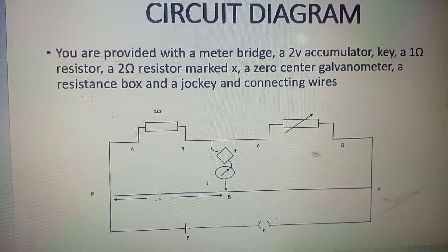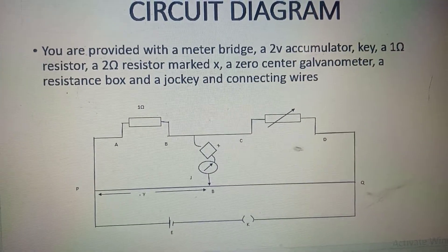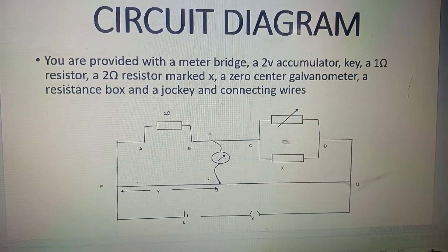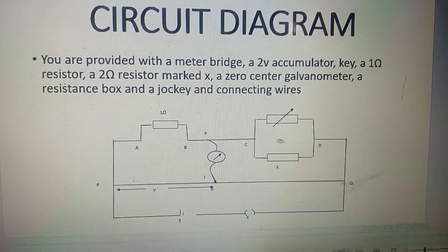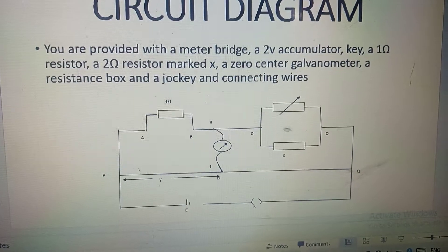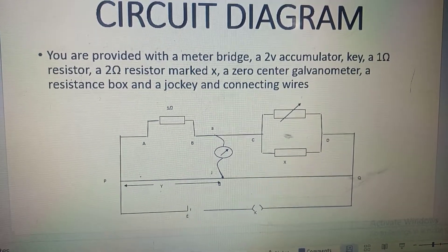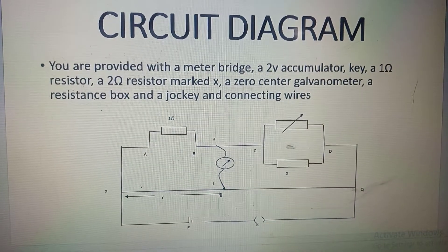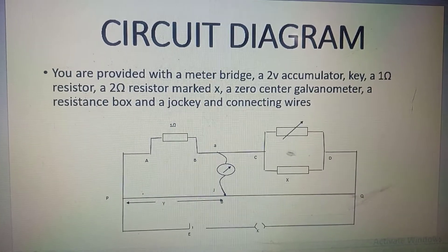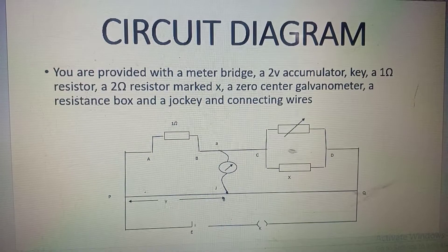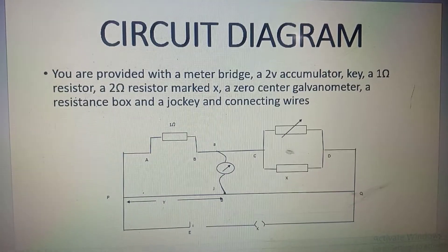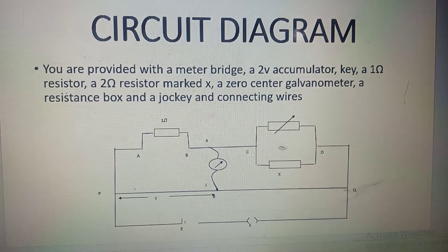In Case 2, the resistance box is connected in parallel with the unknown resistor at the right gap of the meter bridge, while the known one-ohm resistor is connected at the left gap. This is another possible connection, but Case 1 is very much preferable. I'm going to show you how to connect Case 1 and how to obtain accurate results while taking readings.